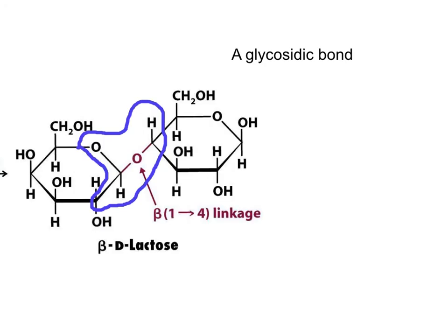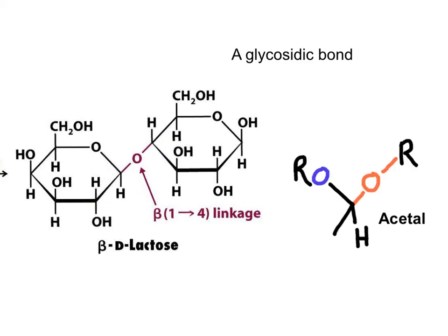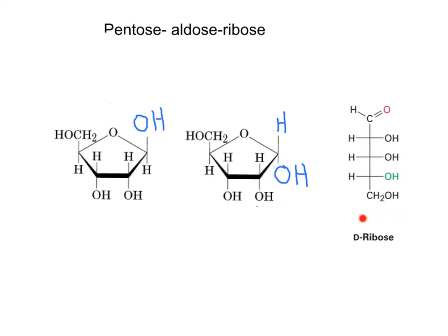We need to pay close attention to this glycosidic bond. We have two sugar units — a galactose and a glucose — forming a beta-1,4 glycosidic bond. Glycosidic bonds are acetals where one OR is part of one ring and the second OR is coming from the second sugar unit.